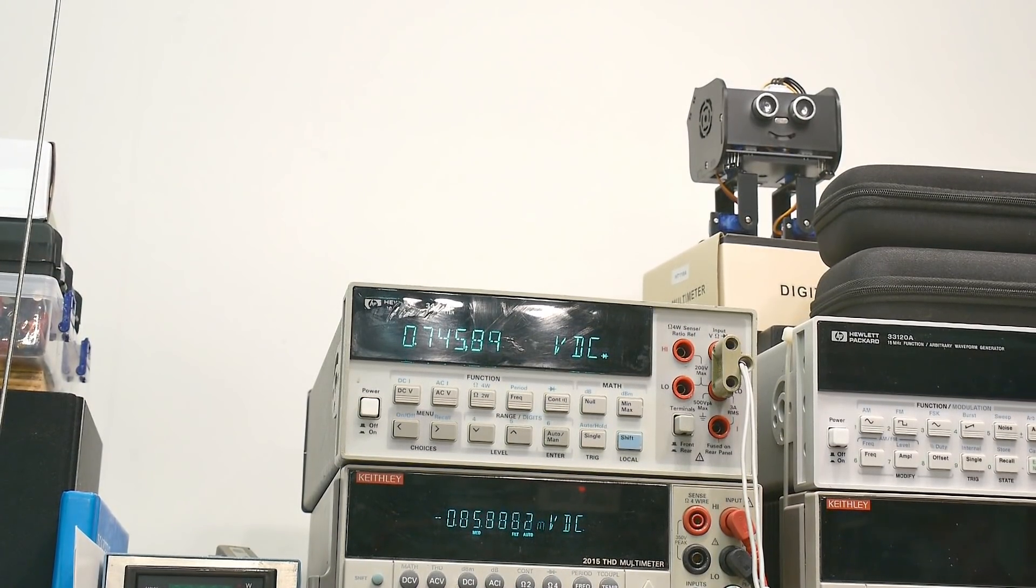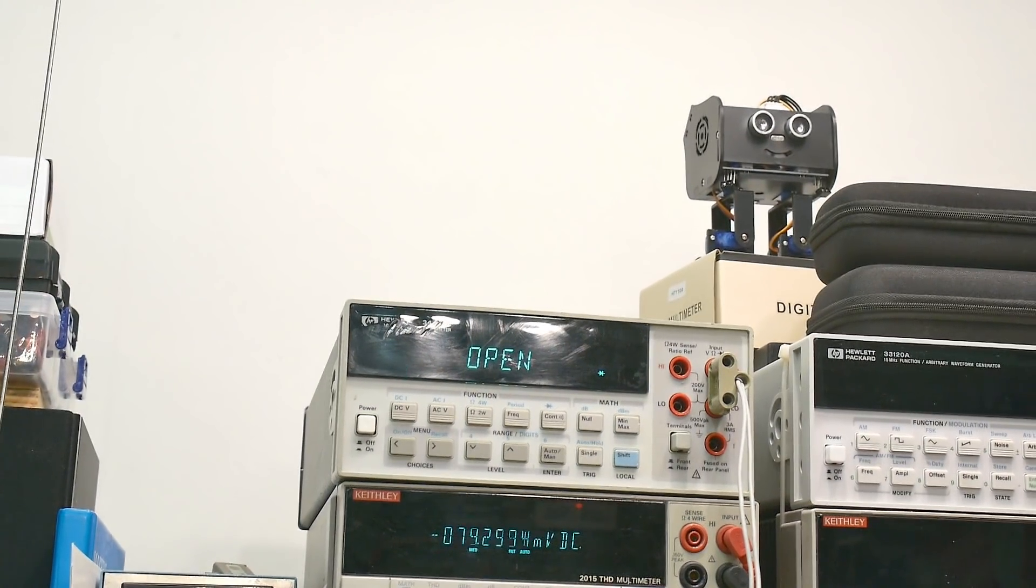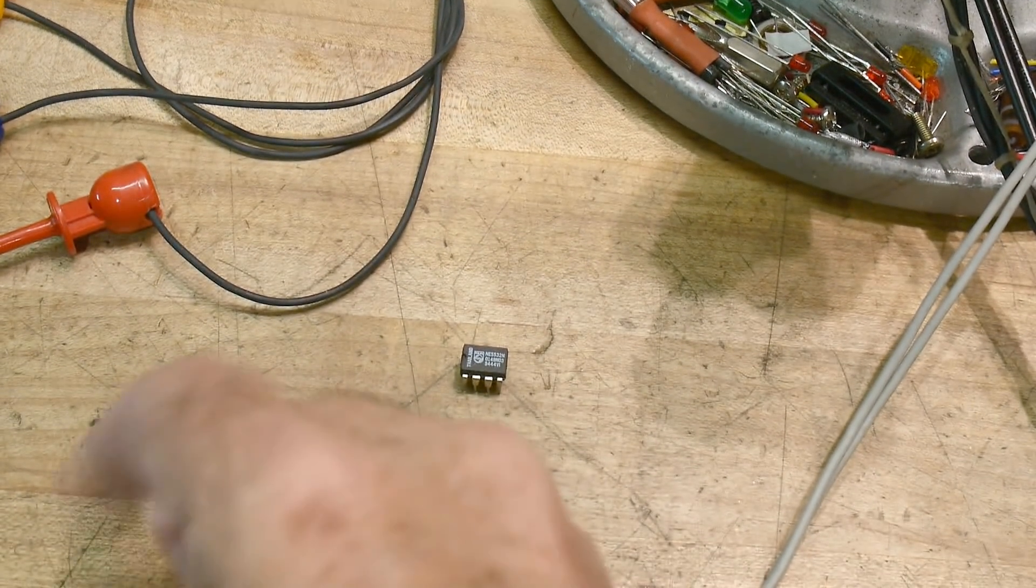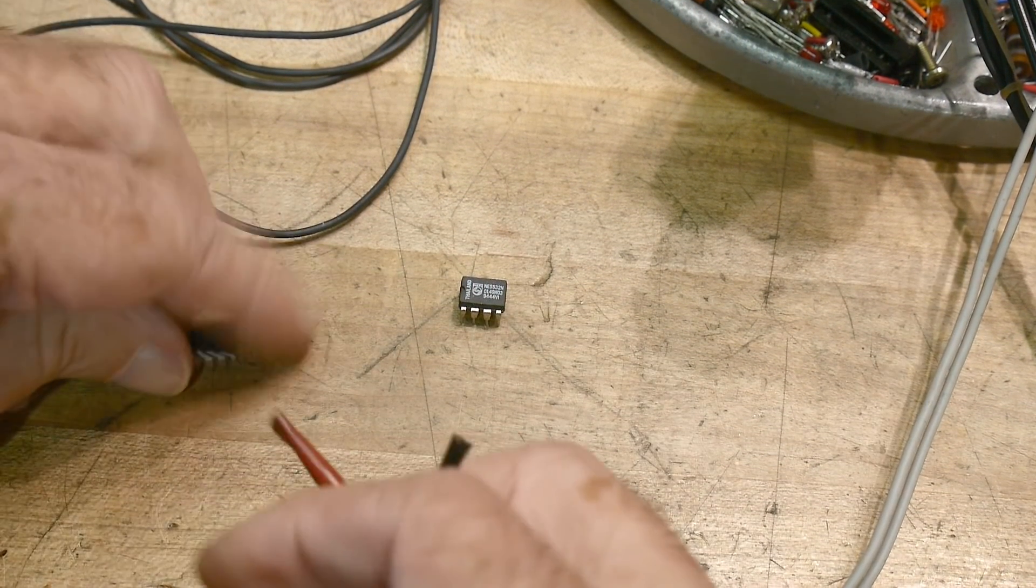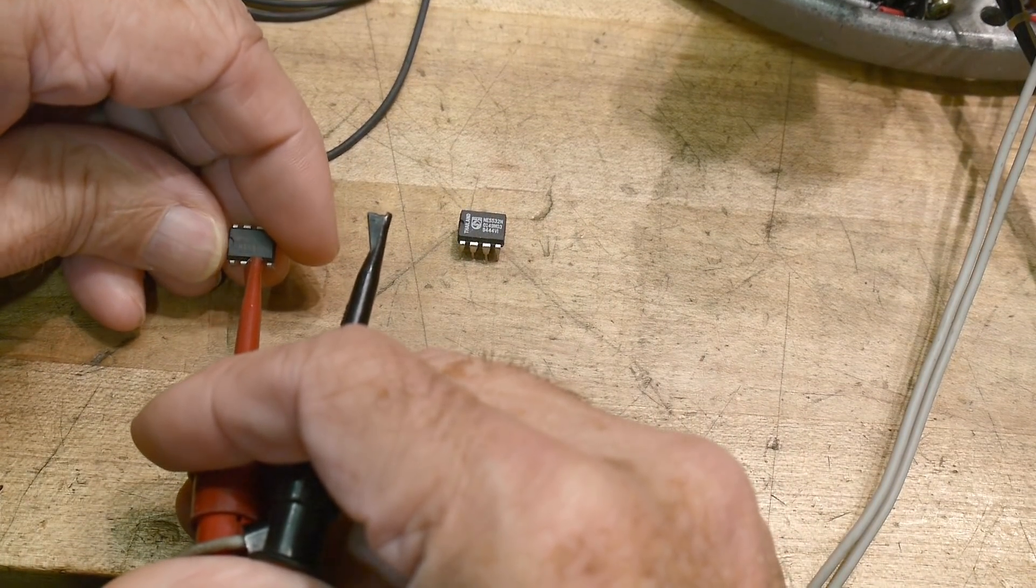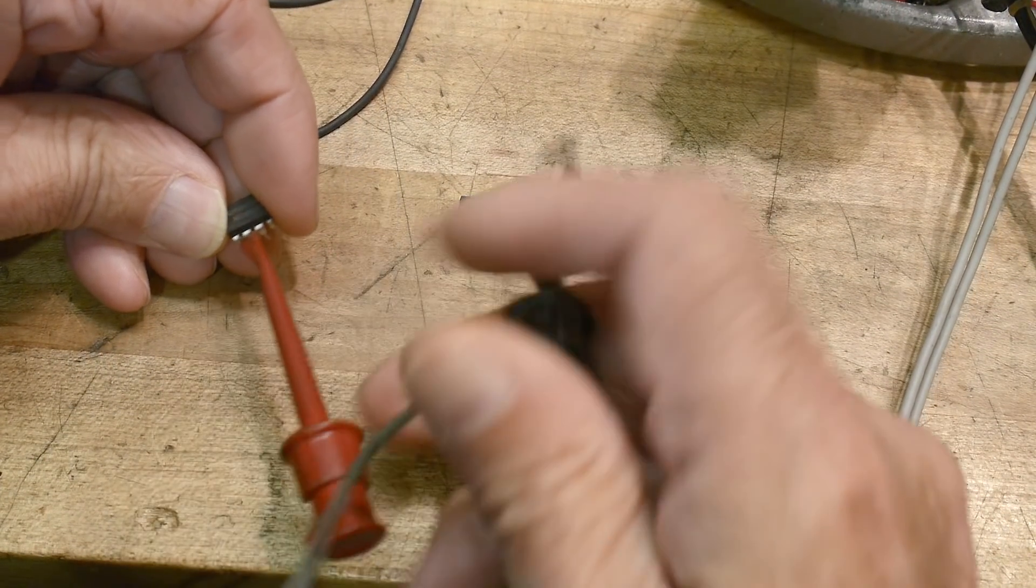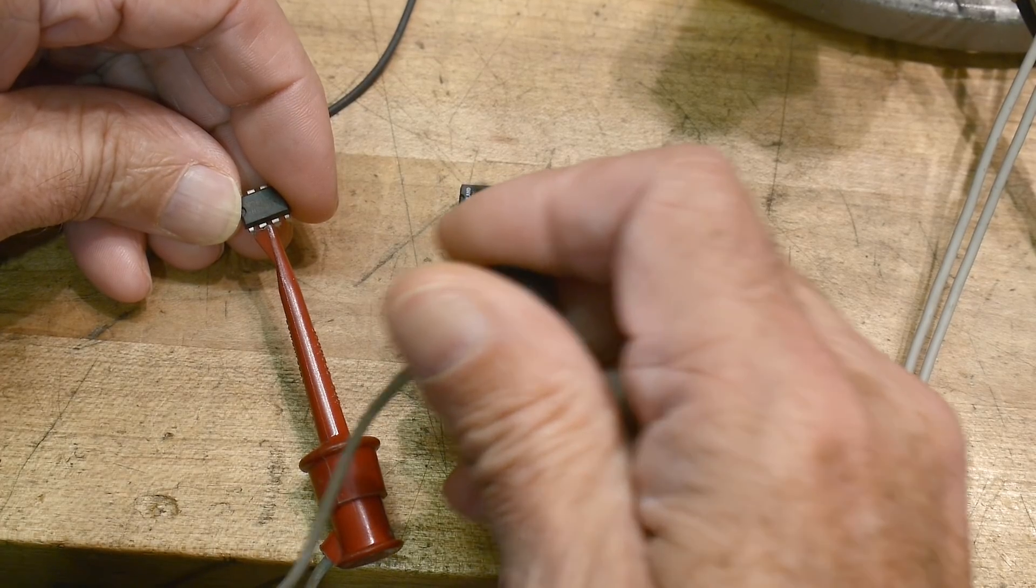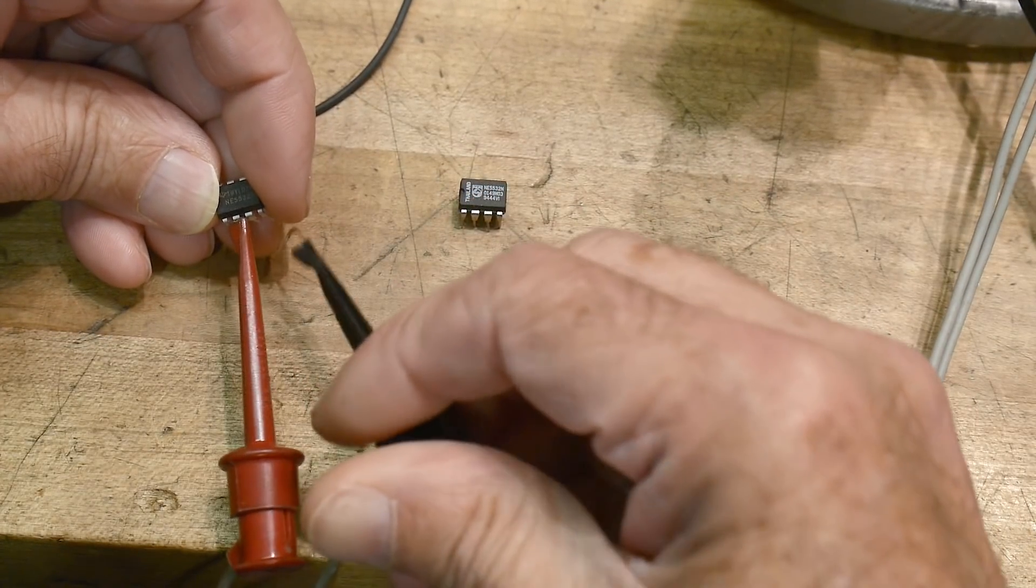So let's take a look at the other op-amp that I have. This one is marked Texas Instrument NE 5532. This one is marked Phillips NE 5532, and I will hook this up plus and minus...